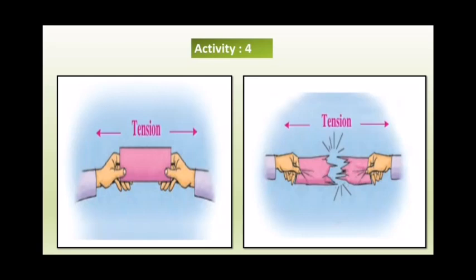Here we have another activity which is there in your textbook. You have to take a long strip of thin paper, hold one end of the paper in your right hand and the other end with your left hand. Now you need to pull both the ends away from each other. Try this at home and observe what happens.